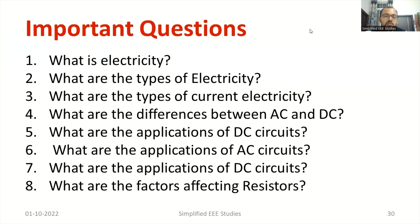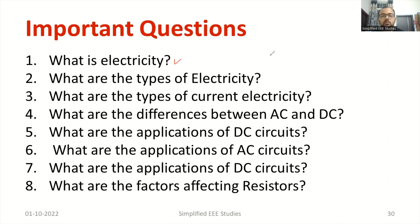Let us proceed with different types of questions you may get in the Viva section. First and foremost, you can think about simple questions right from the beginning. What do you mean by electricity? Electricity is nothing but the movement of electrons. Then, what are the types of electricity? There are two types of electricity.